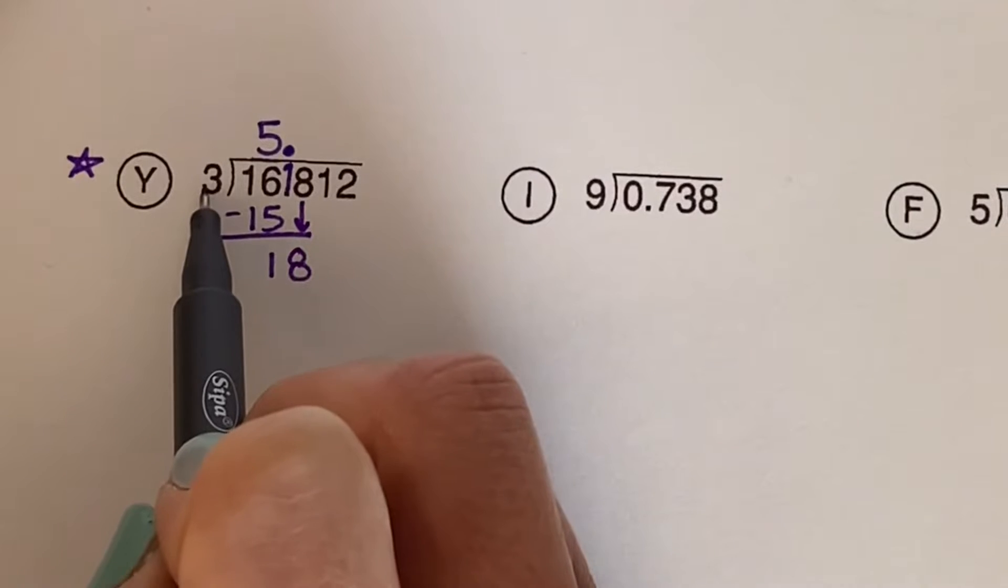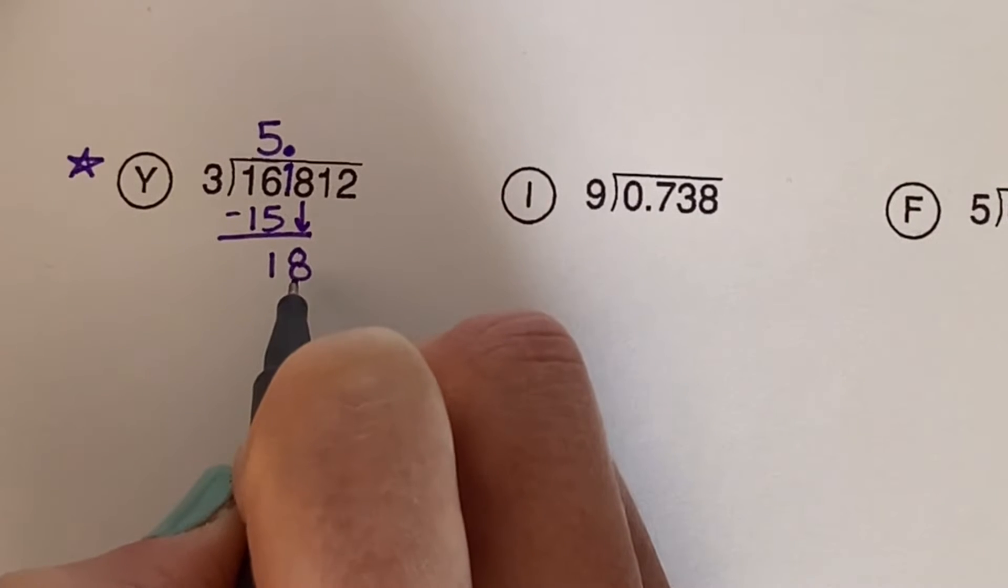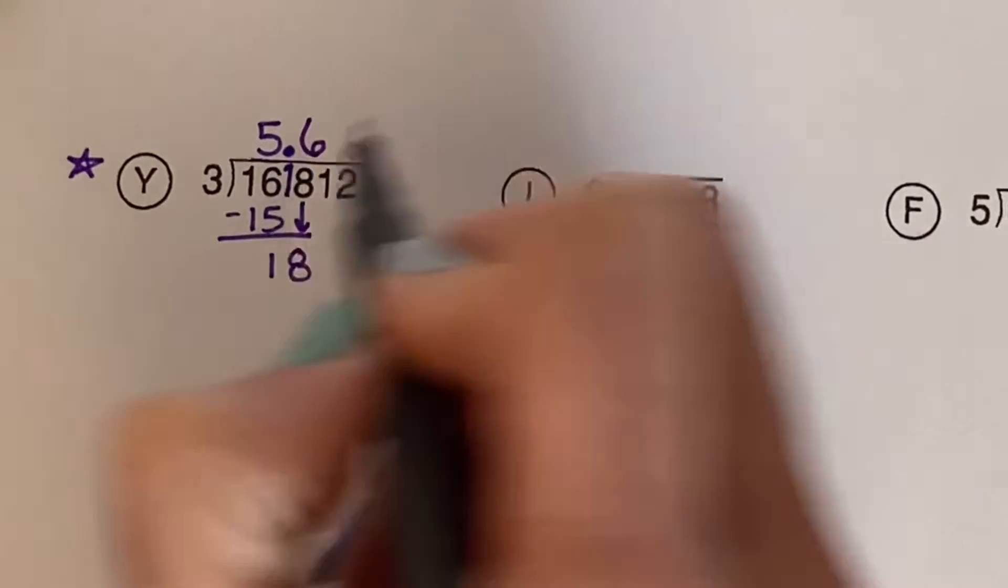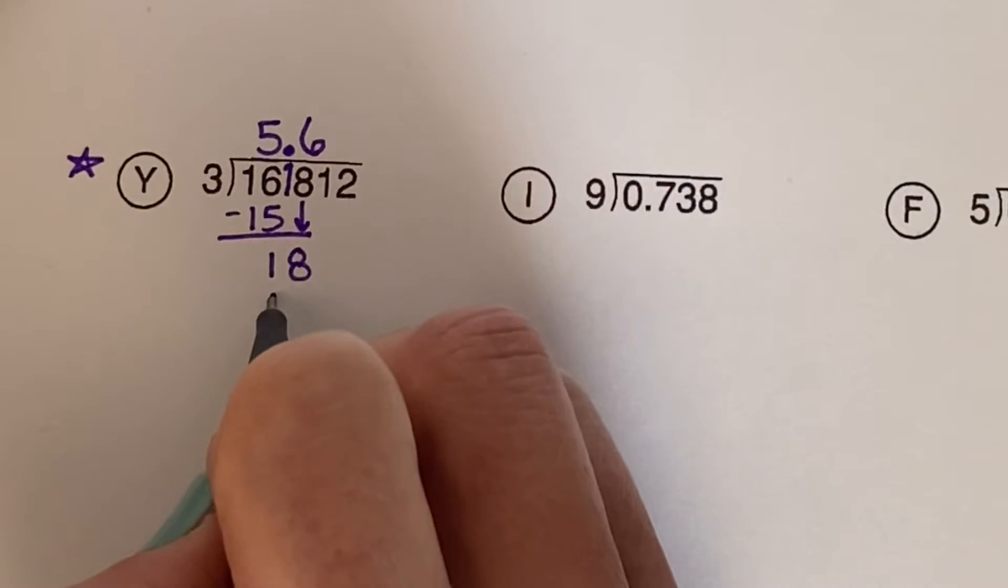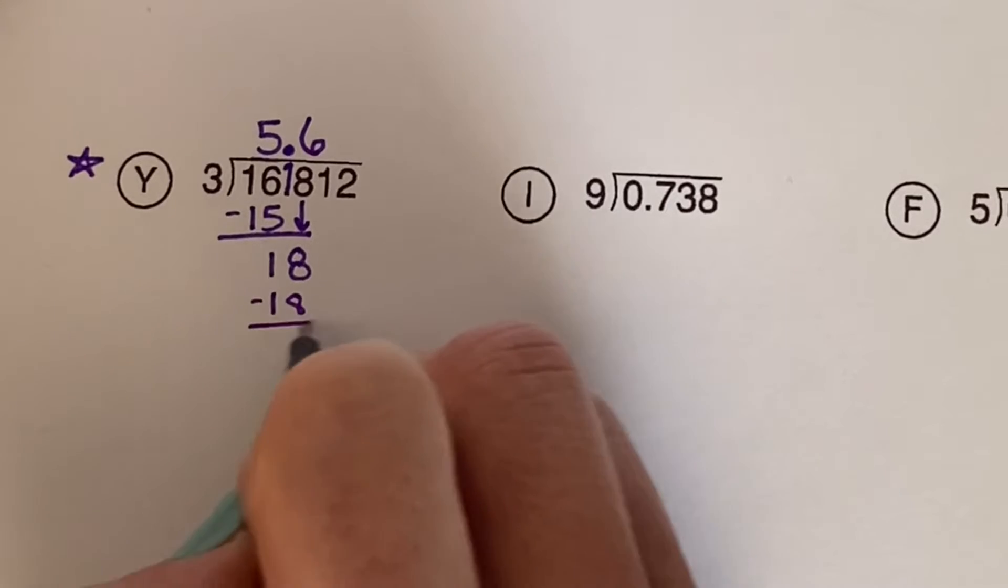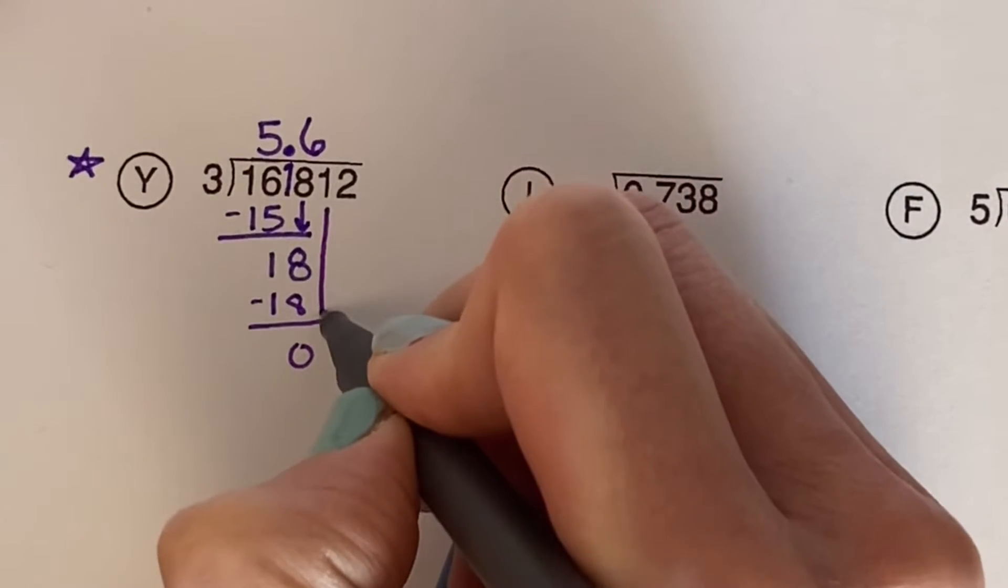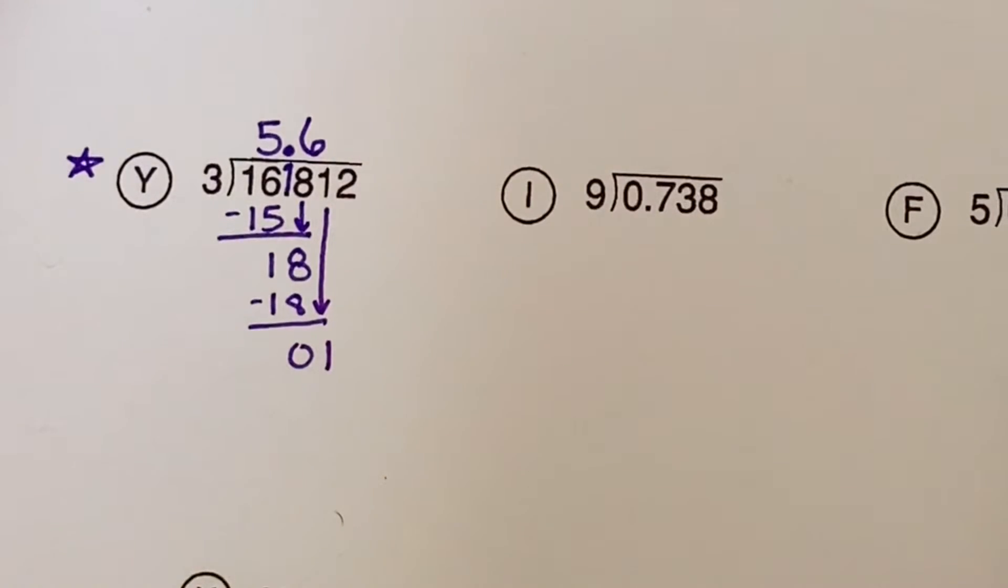Okay, now how many times does 3 go into 18? It goes in 6 times. Put that 6 straight up here, because we're talking about our tenth place. 3 groups of 3 is 18, and we get a 0, which is fine. Bring down your 1.